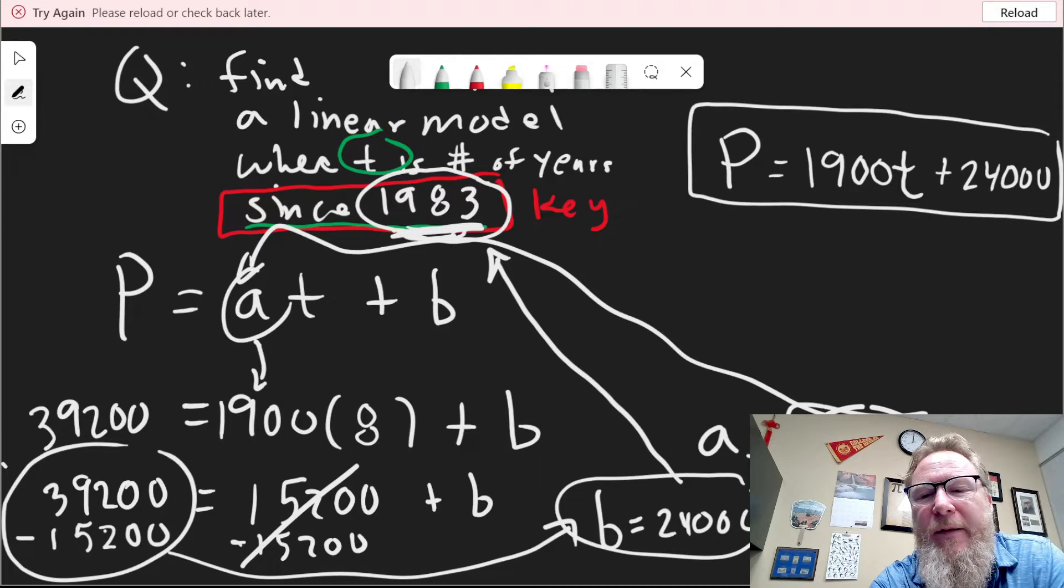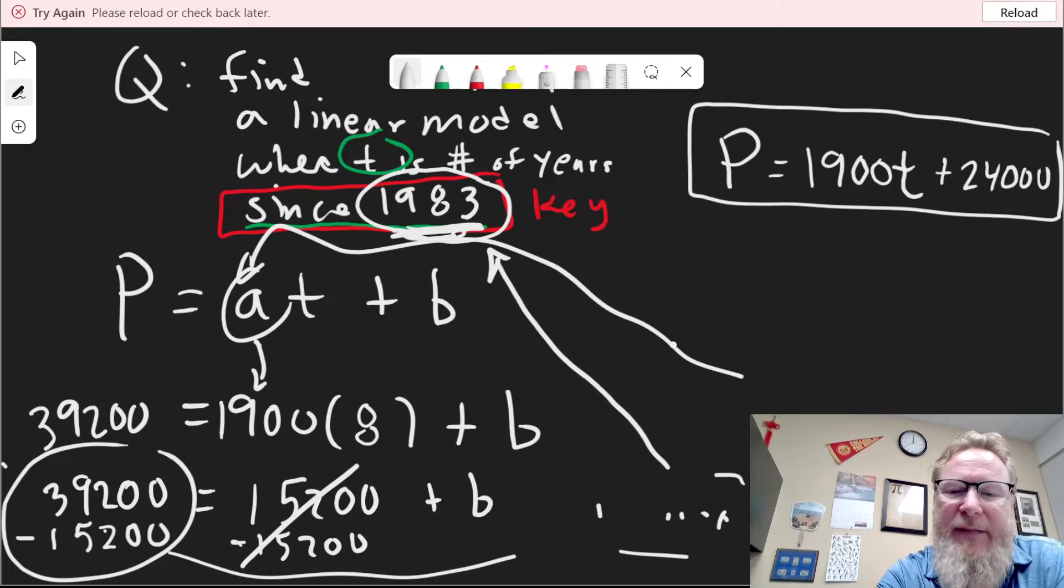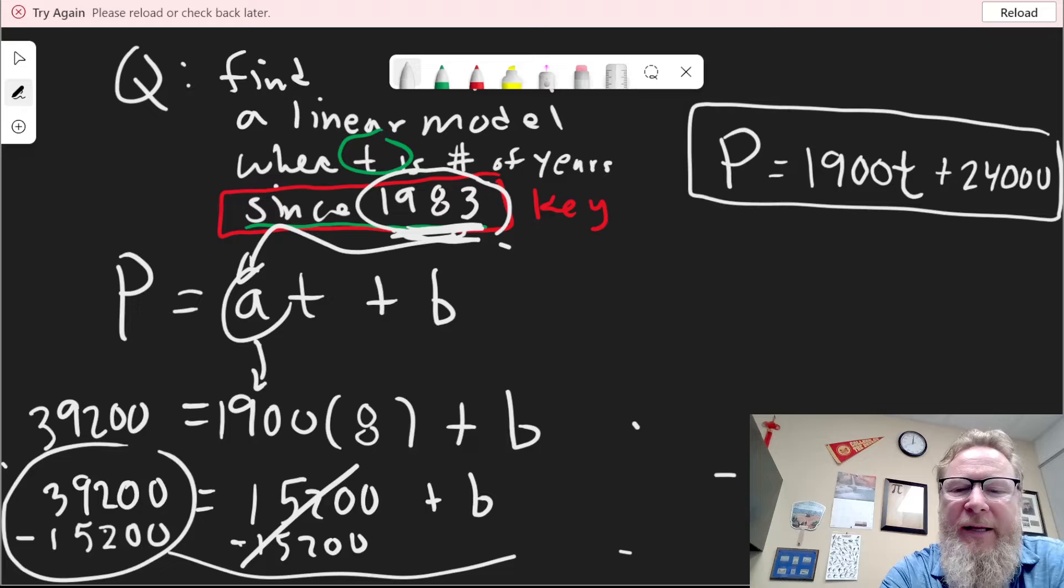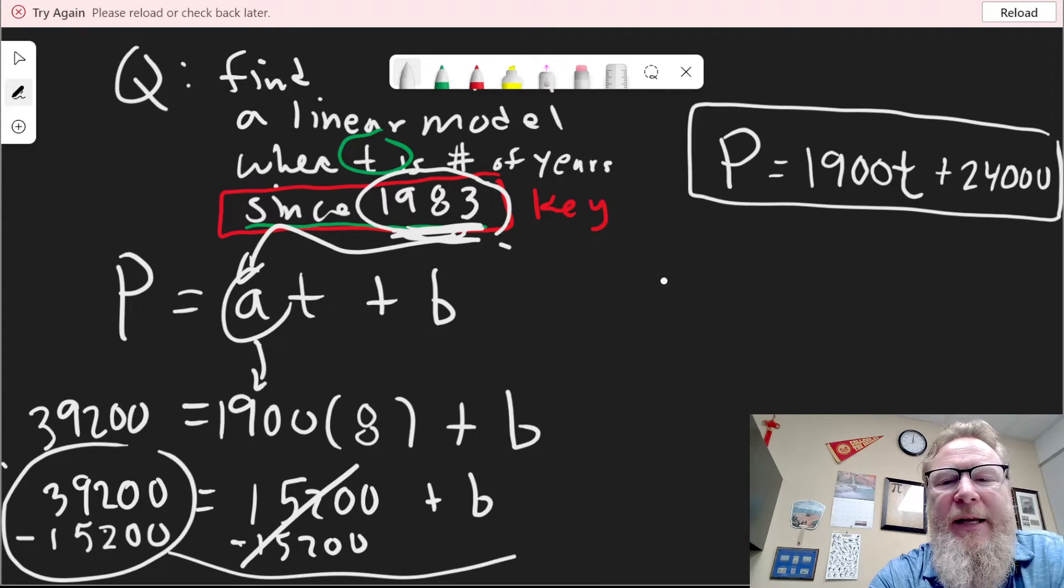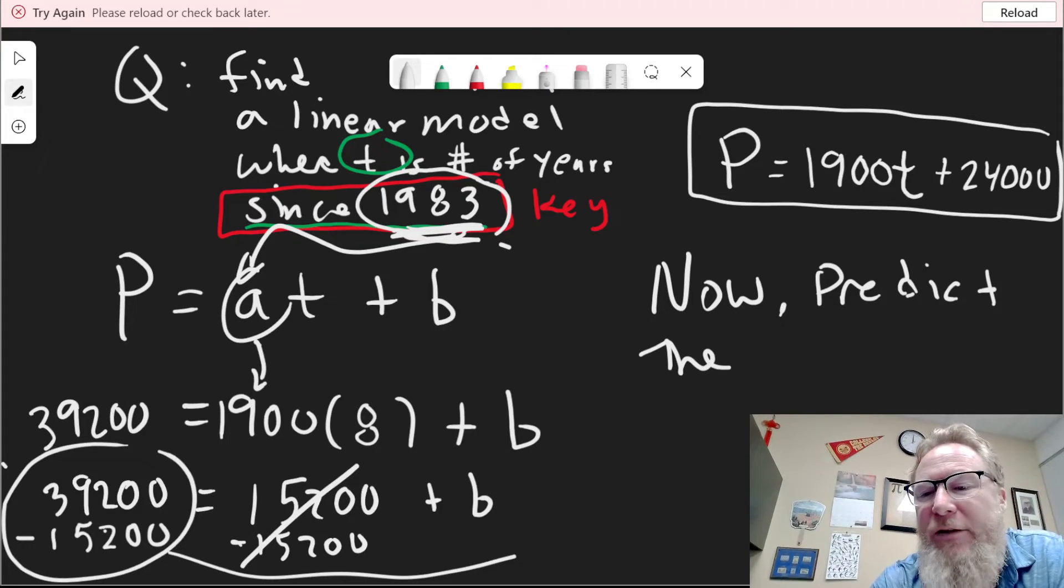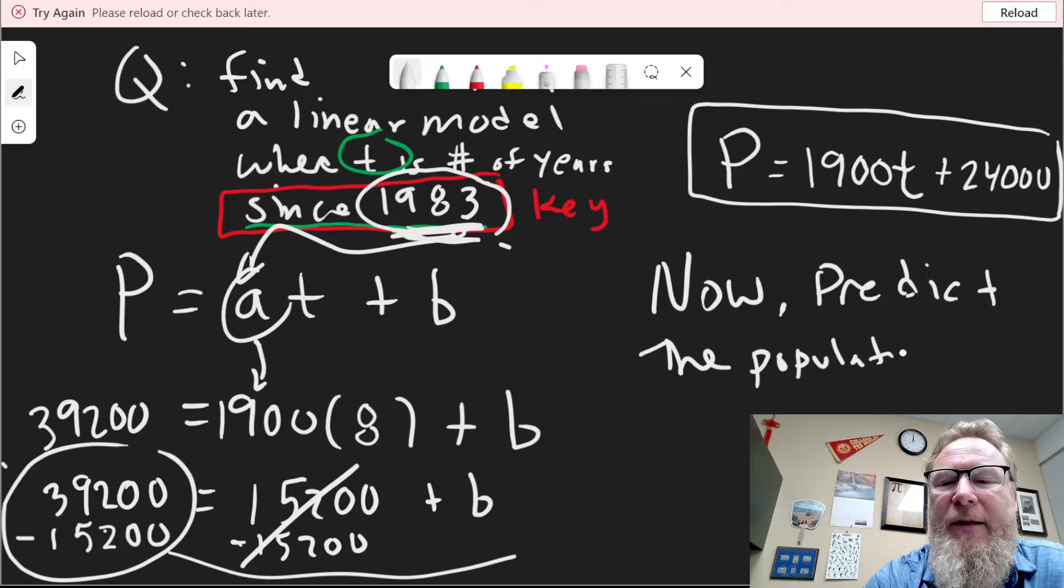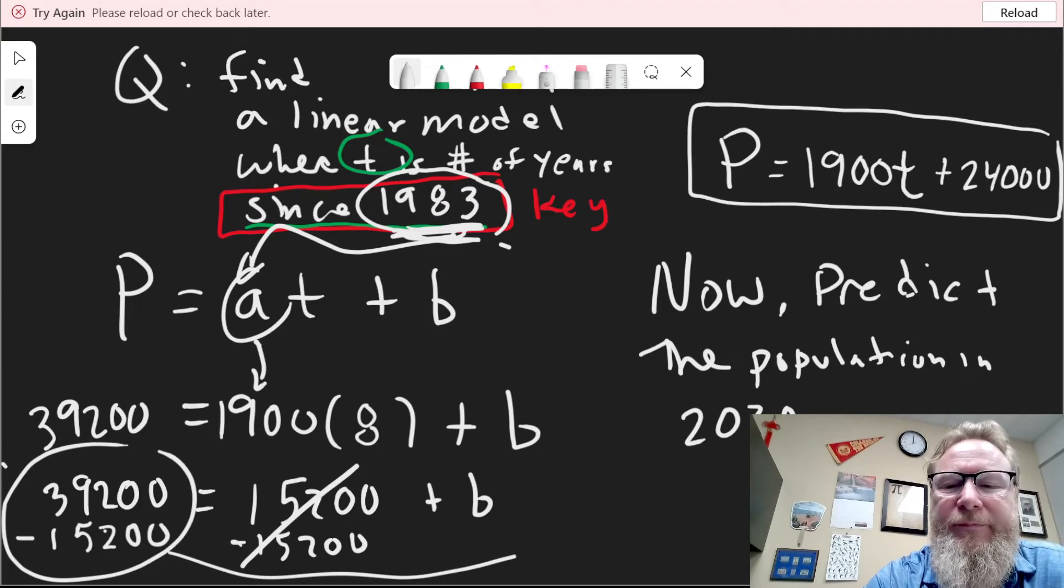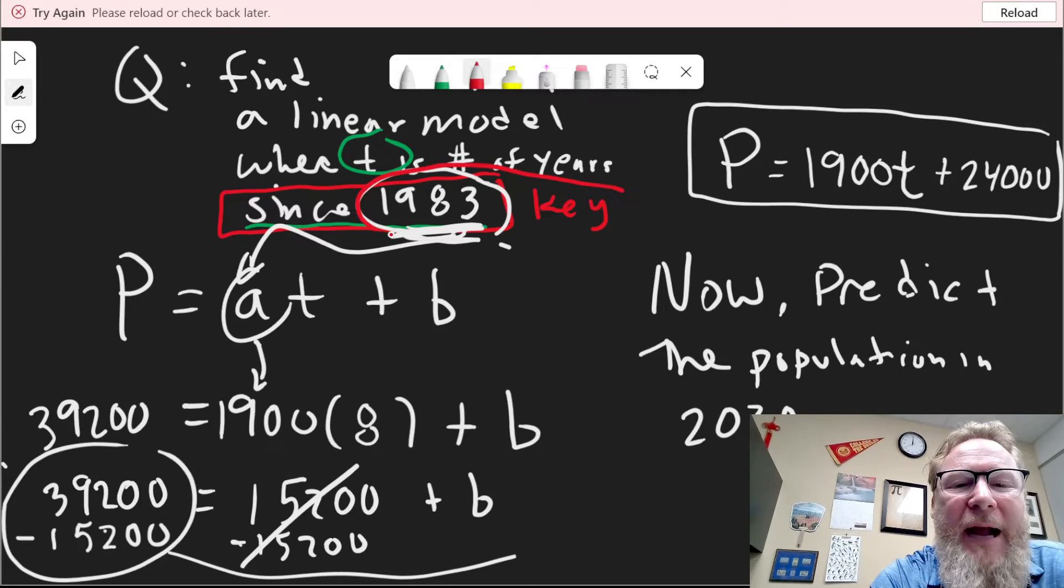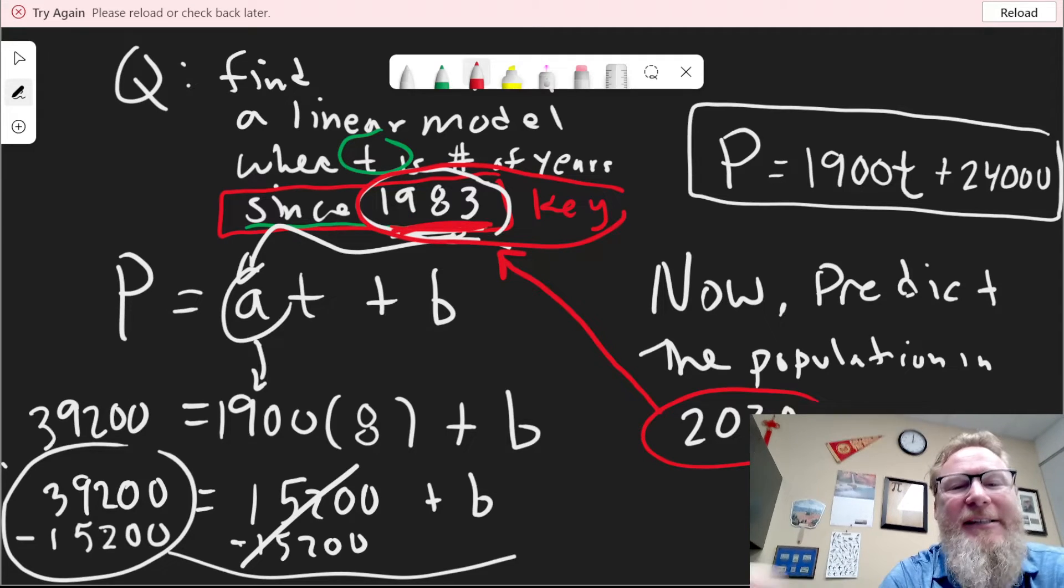The nice thing about this model is it gives you a way of predicting. We don't just do a model for the sake of getting the points. I like to actually use my model. Now, maybe a Part B: predict. And it's pretty accurate. I mean, unless things change. Maybe the economy changes. Maybe people stop moving to this town. But if everything remains the same and continues to increase at the steady rate, we can predict the population in 2030.